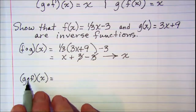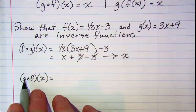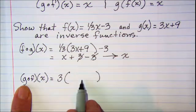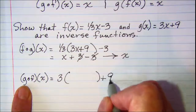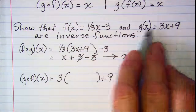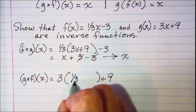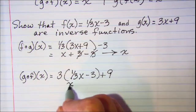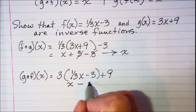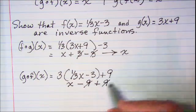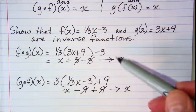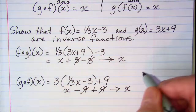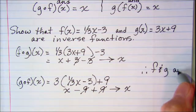Now I need to find g composition f, which means I put my f function into g. I write my g function: 3 times, then in place of x I put my f function — one-third x minus 3 — and then plus 9. Distributing: 3 times one-third x is x, and 3 times negative 3 is negative 9, and then plus 9. Those cancel, and I get x. Since both f composition g of x and g composition f of x equal x, then f and g are inverse functions.